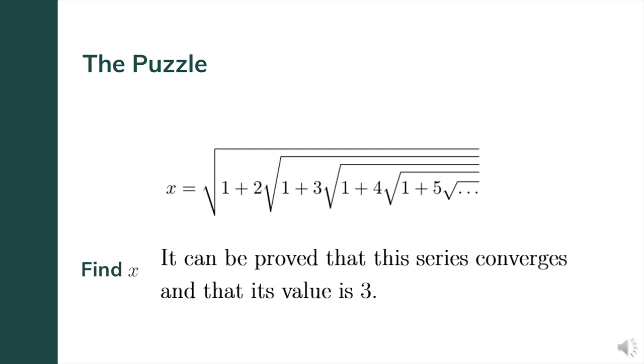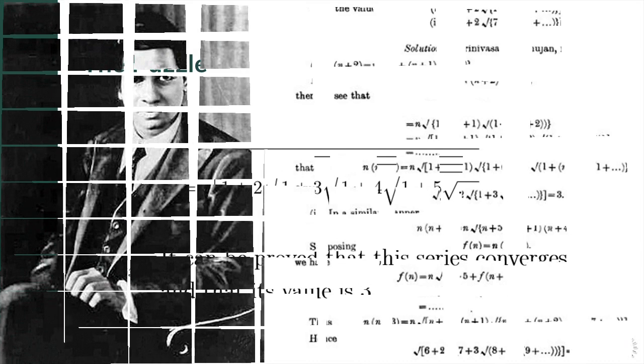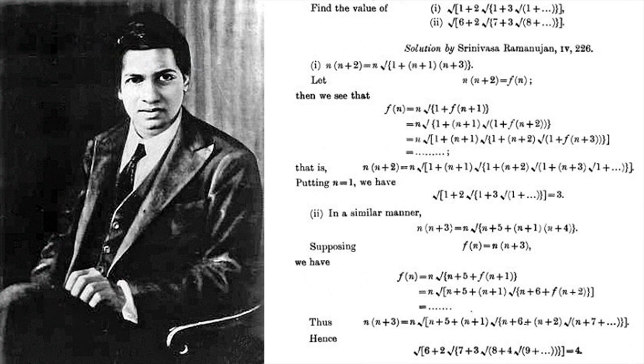We just succeeded in creating a pattern. So, strictly speaking, mathematically, what we did was not a proof. If you are interested in exploring more about the convergence of Ramanujan's nested square roots, I have included some links in the description.